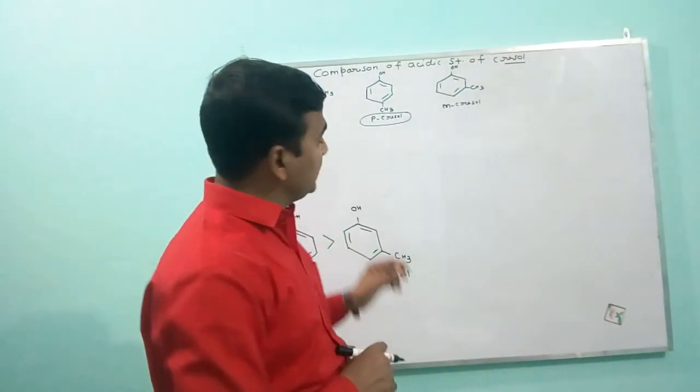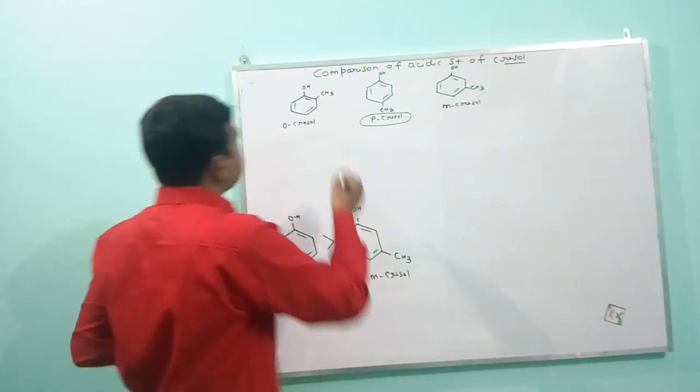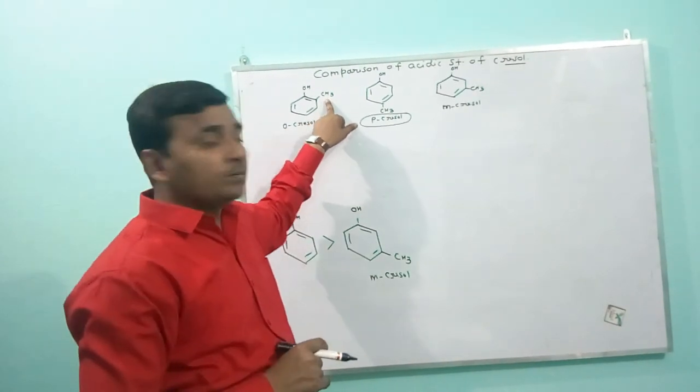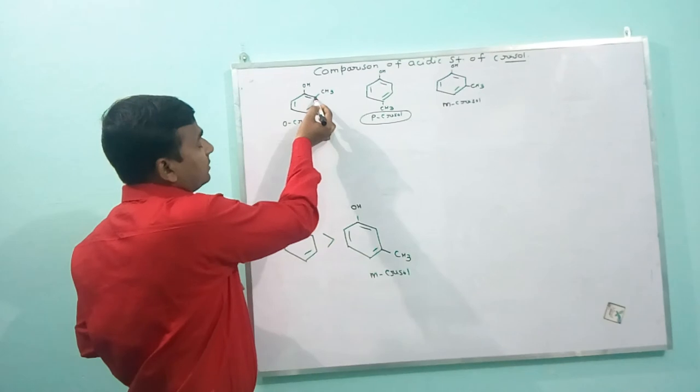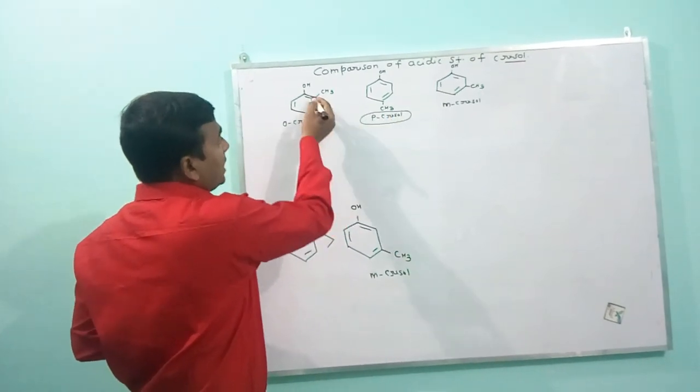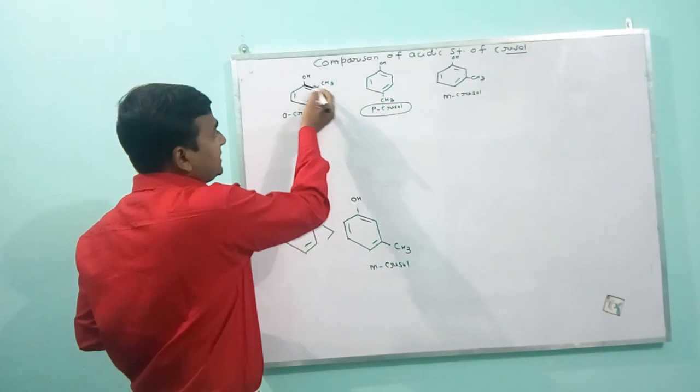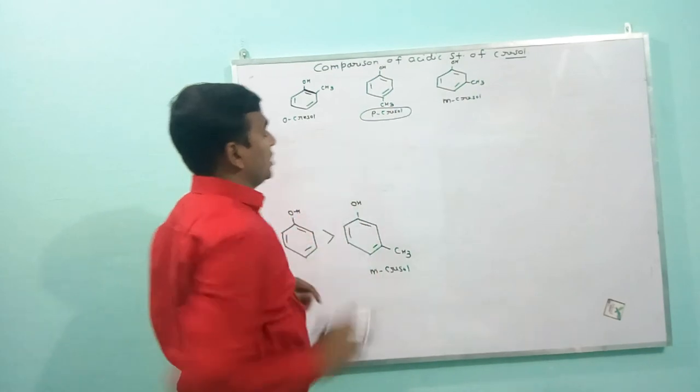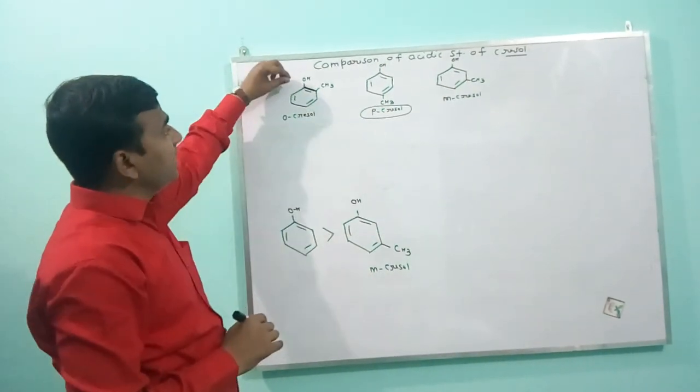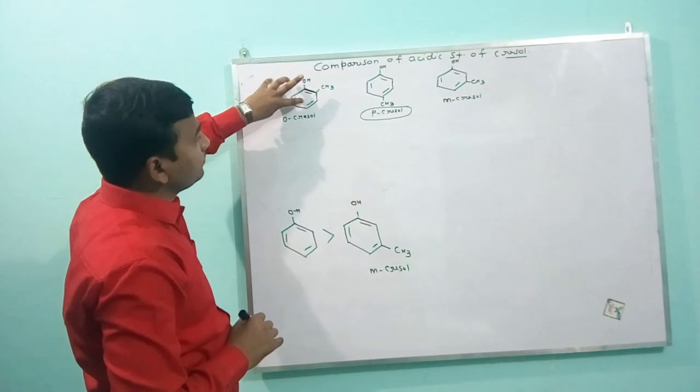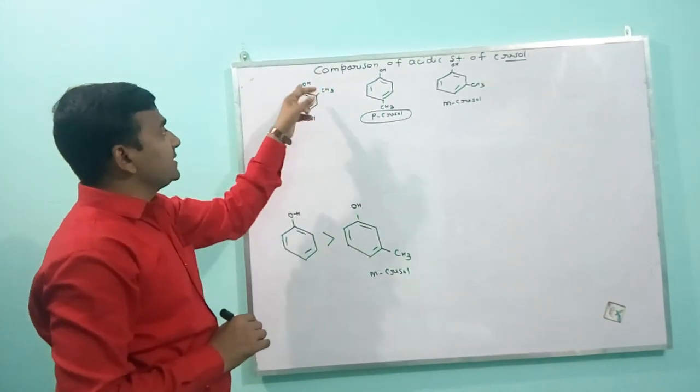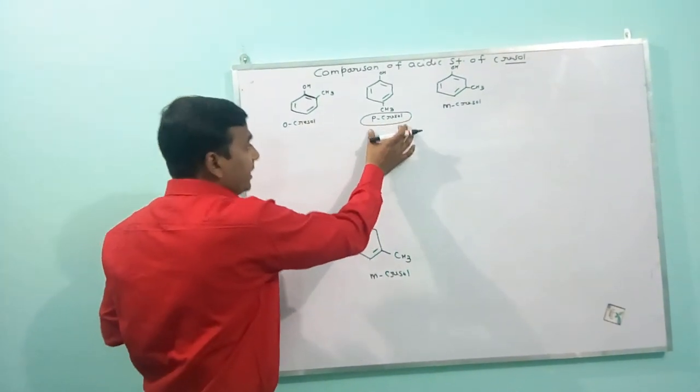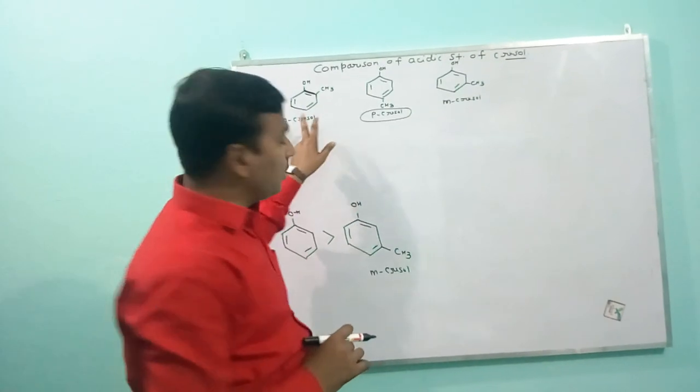let's discuss the acidic strength between ortho and para cresols. Here, electron density will increase to a large extent in comparison to para cresol, because here the distance between OH and CH3 is less than the distance between OH and CH3 in para cresol. So, here the electron density will increase in ortho cresol to a large extent due to small distance between OH and CH3. Hence, para cresol will be more acidic than ortho cresol.